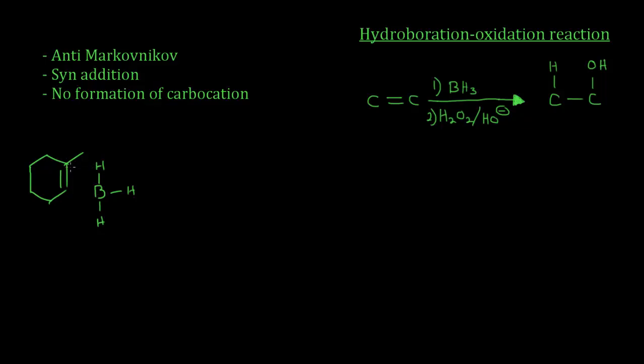So it attaches itself in such a way that the hydrogen and the boron both attach. Now the cool thing about this is that boron is actually less electronegative than hydrogen, and that makes this hydrogen partial negative and this partial positive. What that means is that since this is partial negative, these electrons are going to go to here.